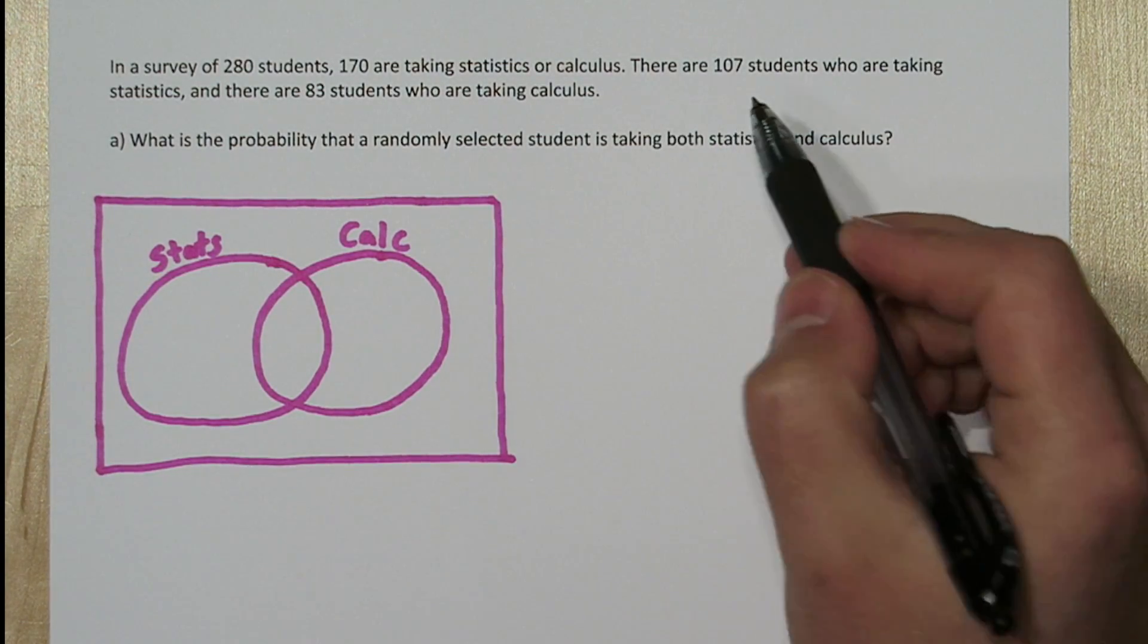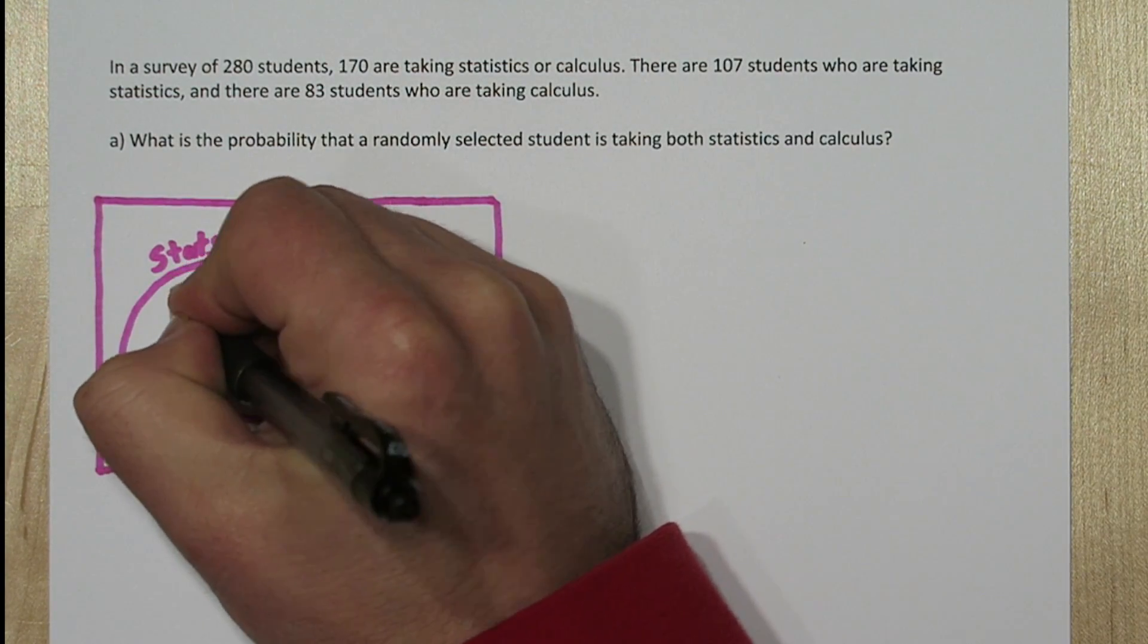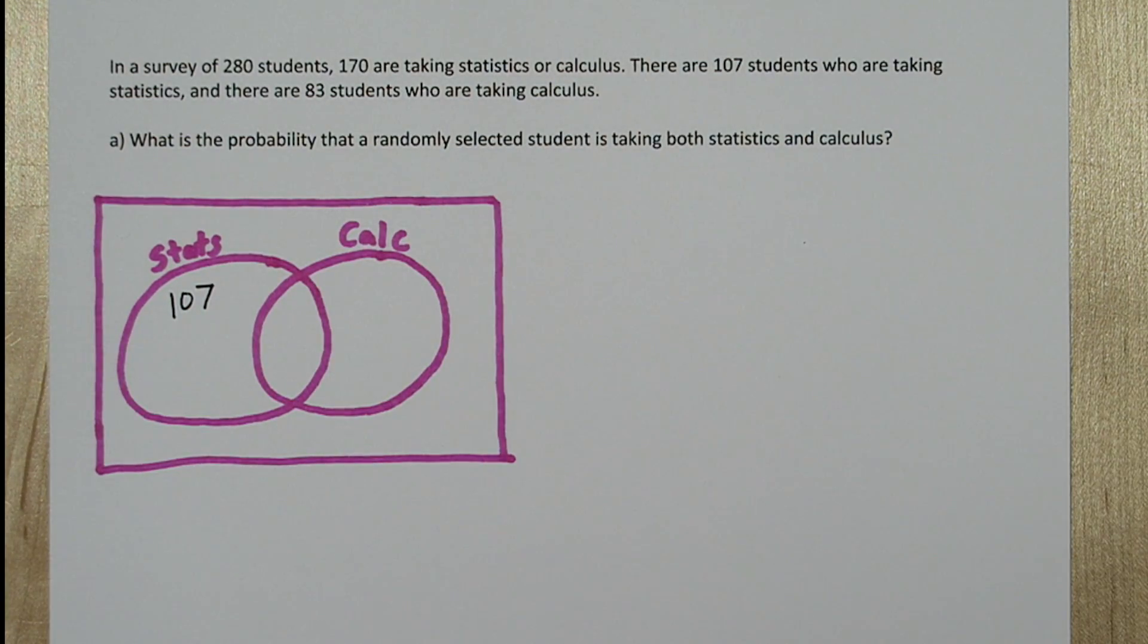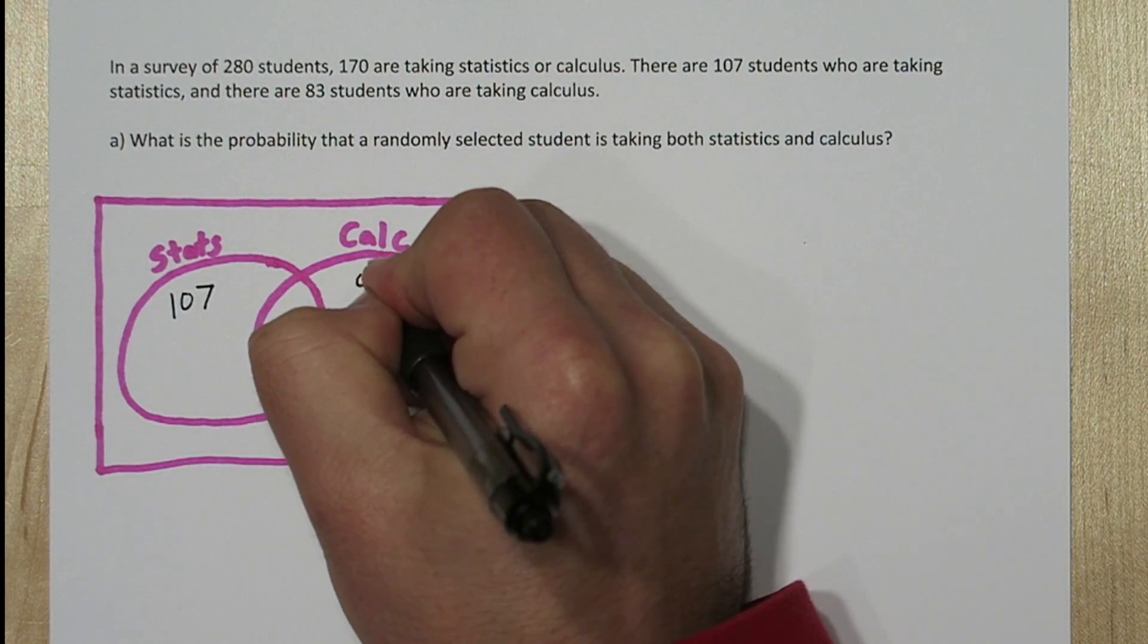Now we're told there's 107 students who are taking statistics, so I'll write 107 in the stats bubble. We're also told there's 83 that are taking calculus.